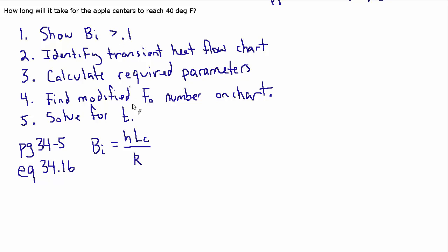If it's less than 0.1 it can be treated as lumped which is a nice simplification for a lot of problems. In this case we're going to show that it's greater than 0.1 and that it's distributed so that we can't make those simplifying assumptions. But then there are these charts in the appendix that are somewhat simplifying. It's just a different approach that we have to take.